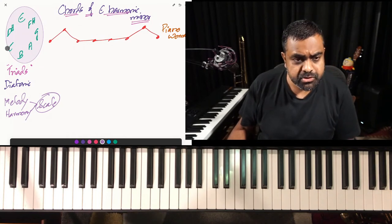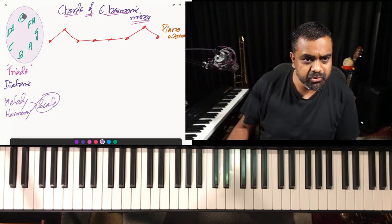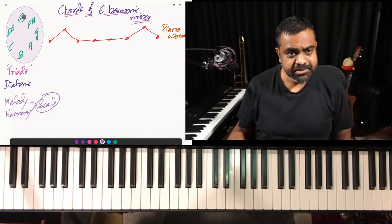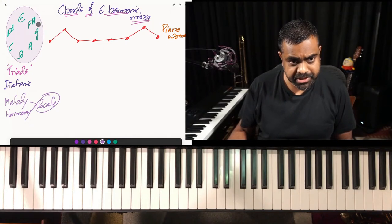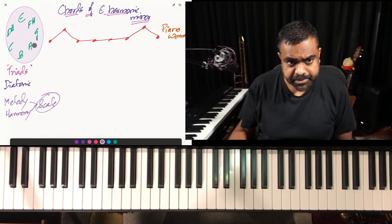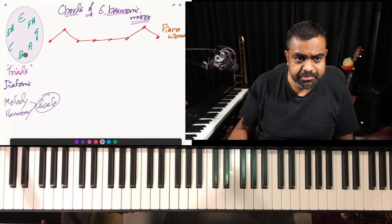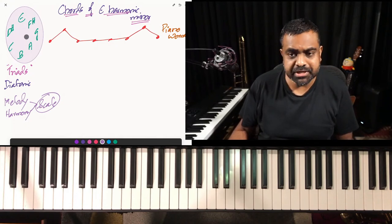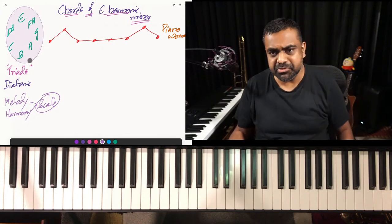When you build a triad, it's easy — the books tell you one-three-five. What I like to do visually since we've drawn it in a circle: take any note, in this case E, skip the next one, choose G, skip A, get B. The resultant three-note structure is E, G, B. In a circle you're just going clockwise, skipping one each time — one-three-five.